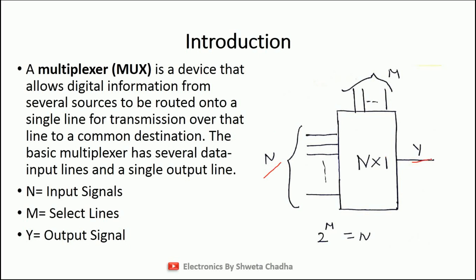The basic multiplexer has several data input lines and a single output line. Generally, a multiplexer is termed as N cross 1, where N is the number of input lines. Where M is termed as the select lines. The function of the select line is to select which input signal will be collected across the output signal. The formula is 2 raised to the power of M equals N, where M is the number of select lines and N is the number of input signals.